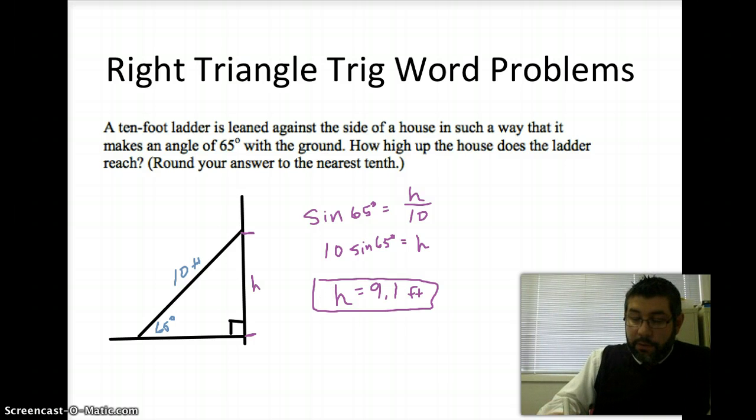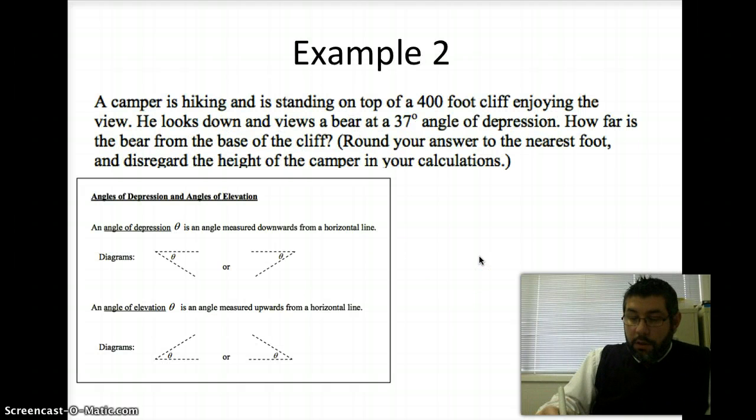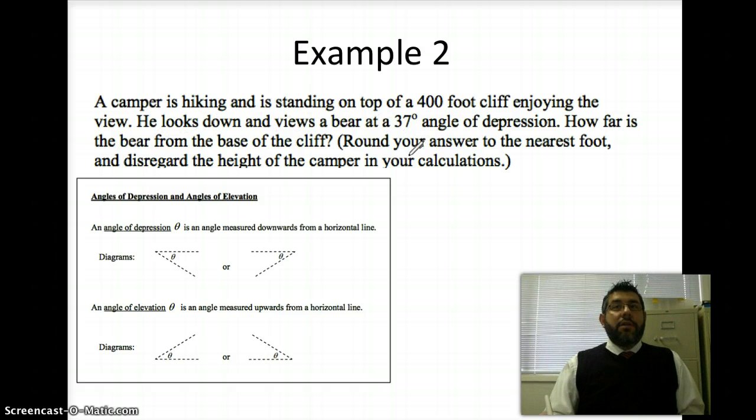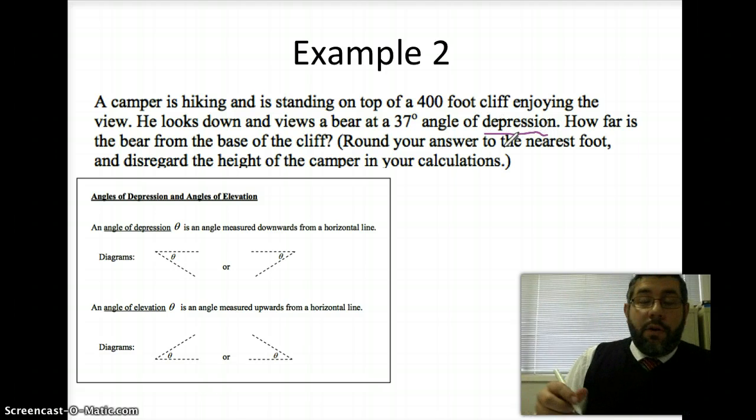So, here's the second example. A camper is hiking and is standing on top of a 400-foot cliff enjoying the view. He looks down and views a bear at a 37-degree angle of depression. How far is the bear from the base of the cliff? Well, we're going to need to know what angle of depression and angle of elevation are.